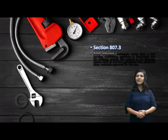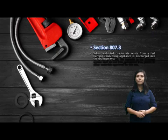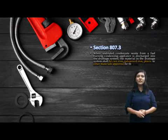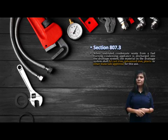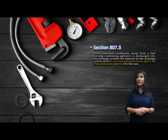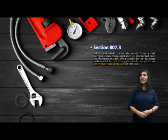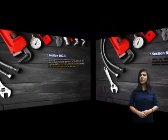Section 807.3: When undiluted condensate waste from a fuel-burning condensing appliance is discharged into the drainage system, the material in the drainage system shall be cast iron, galvanized iron, plastic, or other materials approved for this use. Means that you need to use materials according to the waste being disposed. There is also an exception in Section 807.3.